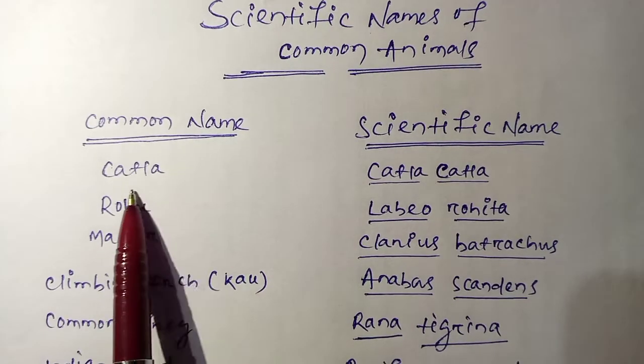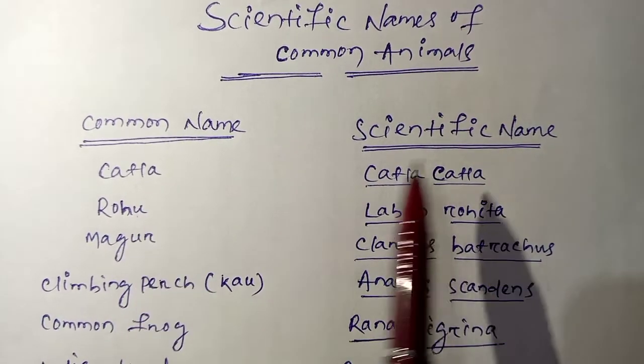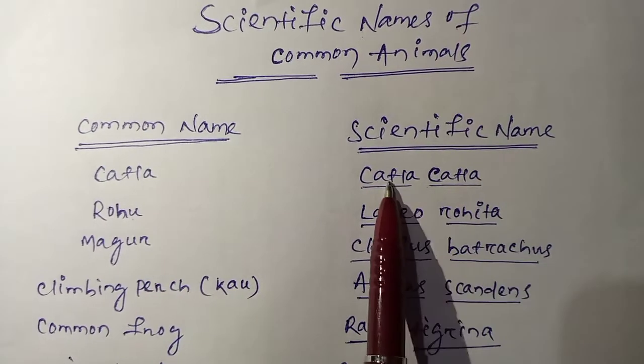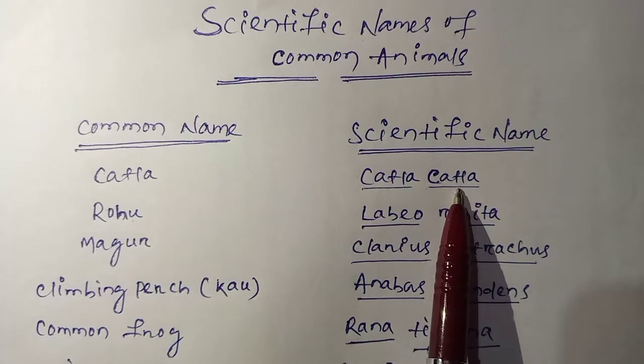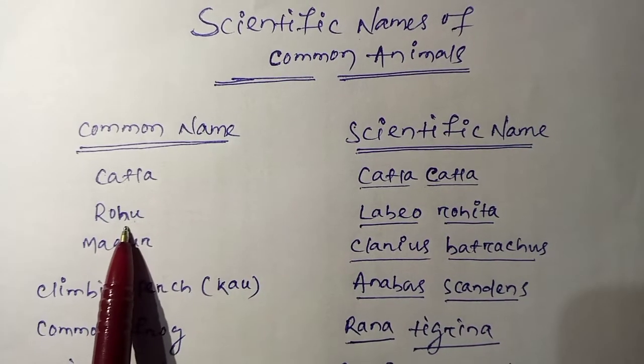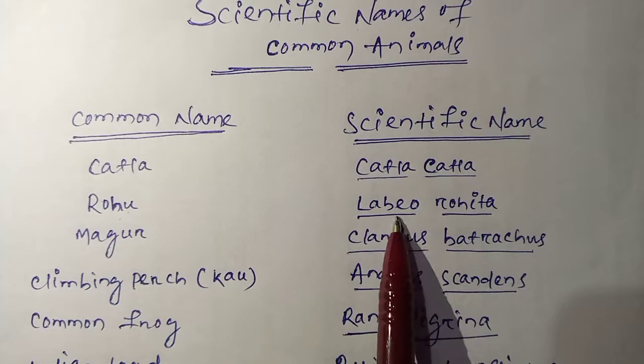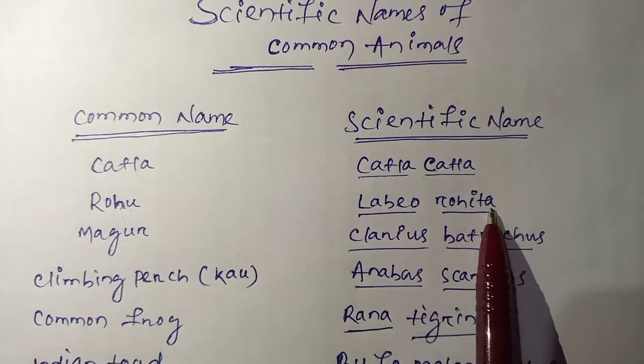First one is Katla. The scientific name is Katla katla. Next is Rohu. The scientific name is Labeo rohitha.